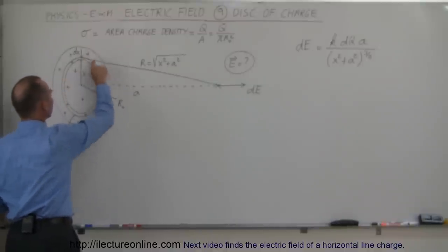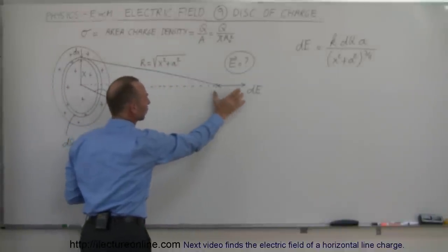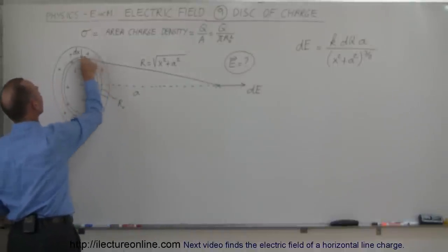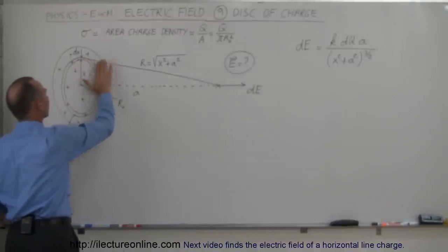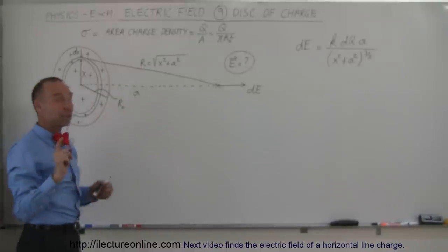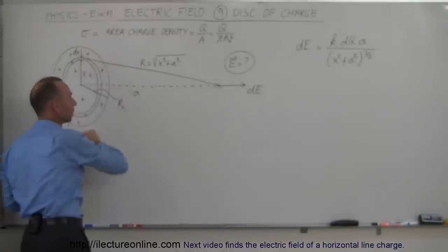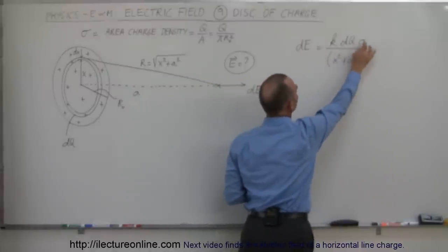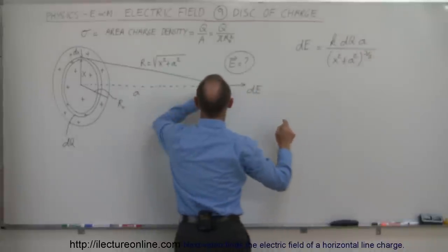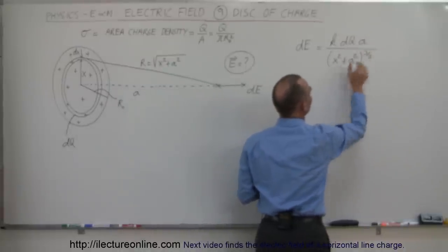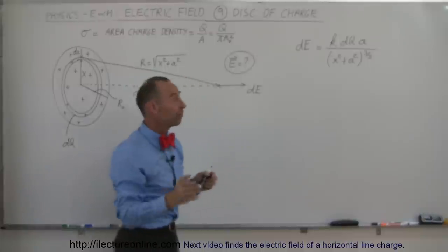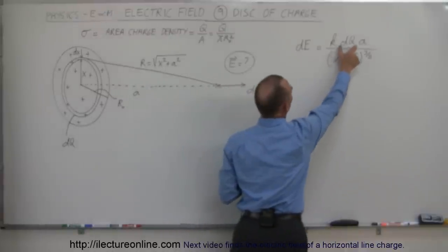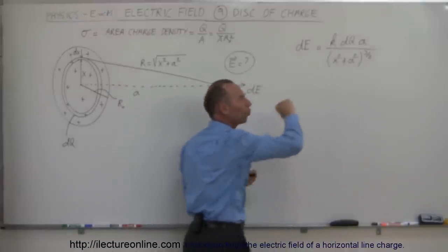We have a ring full of charge, and the electric field at our point — we call it dE because for this problem it's a small subset of the total electric field caused by the full disk. The equation for dE caused by the little ringlet from the last video was equal to K times the charge dQ times the distance A divided by X squared plus A squared to the 3/2 power. The only difference is that we now have a small dQ instead of the total charge on the ring.